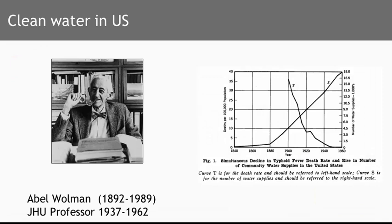Let's go over another case — the case of Professor Abel Wallman, who was a Johns Hopkins professor in the middle of the 20th century. Wallman is credited with a major influence on the establishment of clean water in the U.S. He was an engineer who developed techniques for adding chlorine to water. The slide shows a historical connection between the decline of typhoid, marked with the letter T, diminishing from about 35 cases per 100,000 to almost zero by 1960 in the span of 60 years.